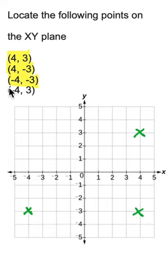And to locate (-4, 3), we move to the left of the origin by 4 and up by positive 3.